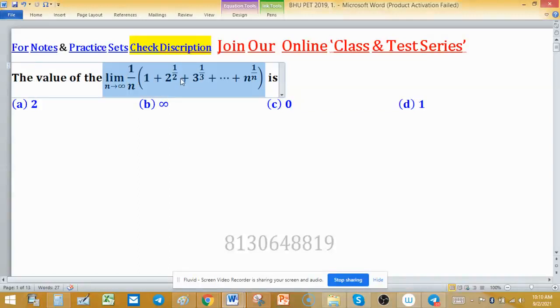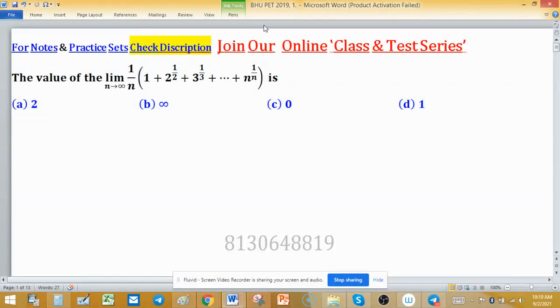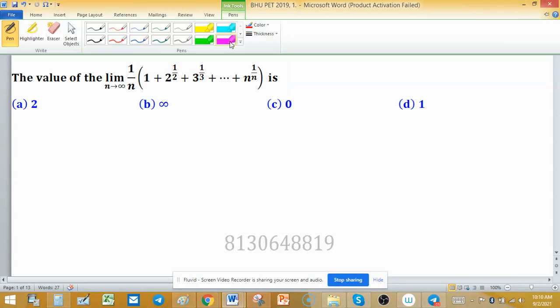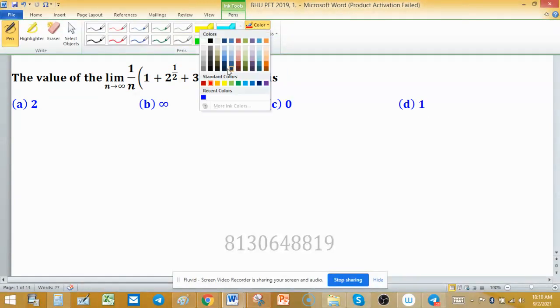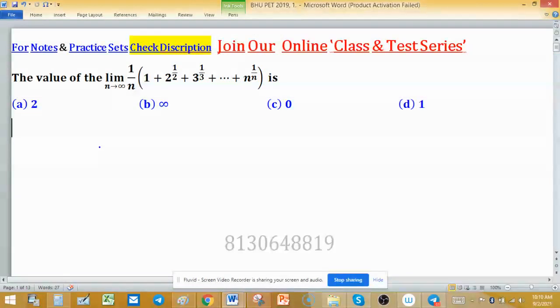The value of the limit of this expression is... Now try to find the limit of this expression. First, we rearrange this expression as limit n tends to infinity of 1/n times the bracket expression: 1 + 2^(1/2) + 3^(1/3) and so on up to